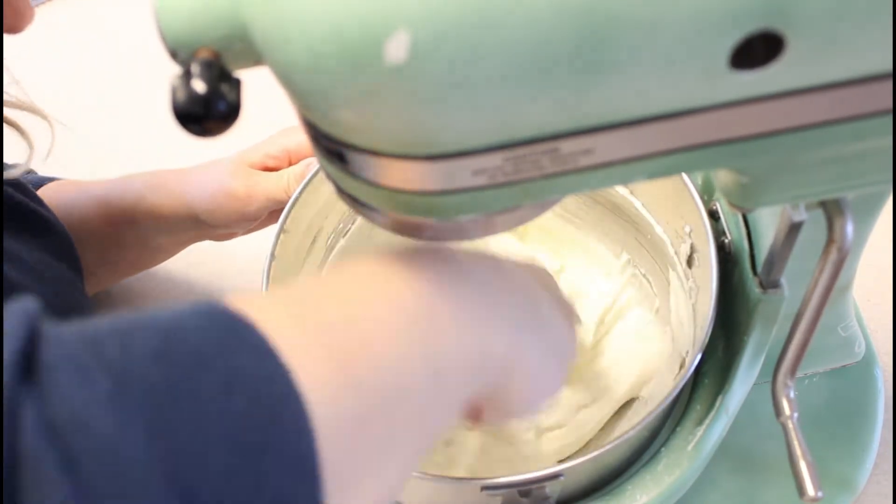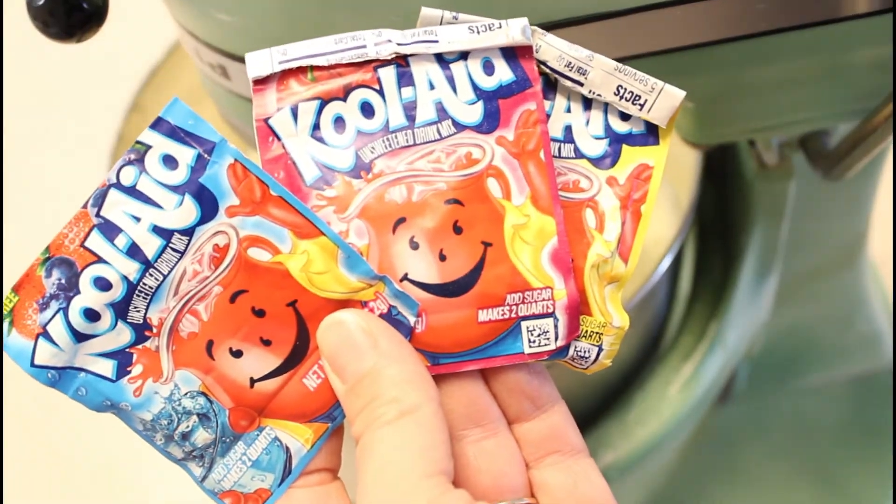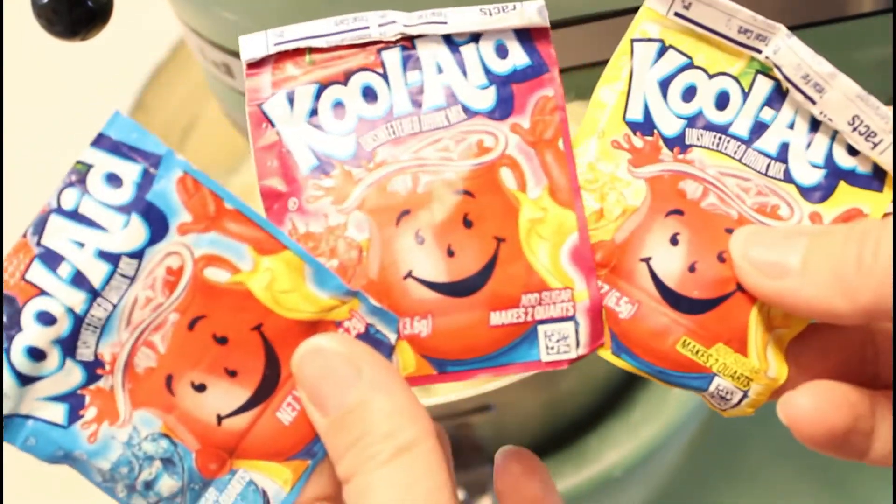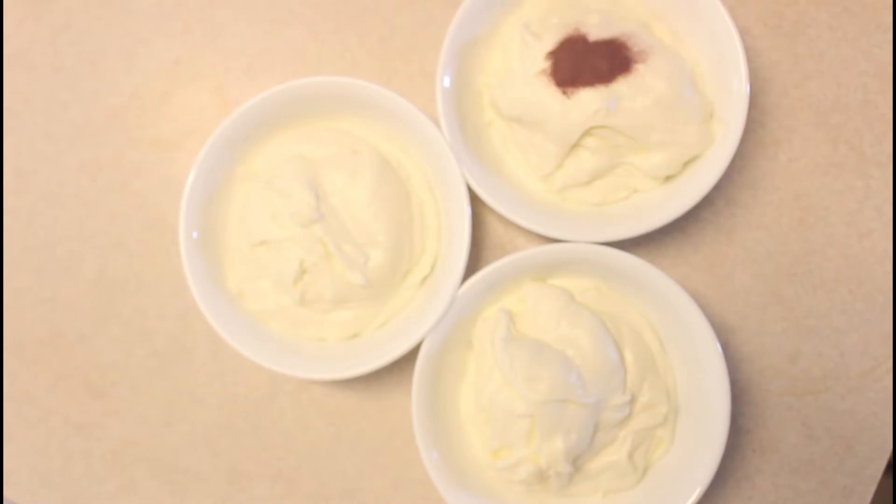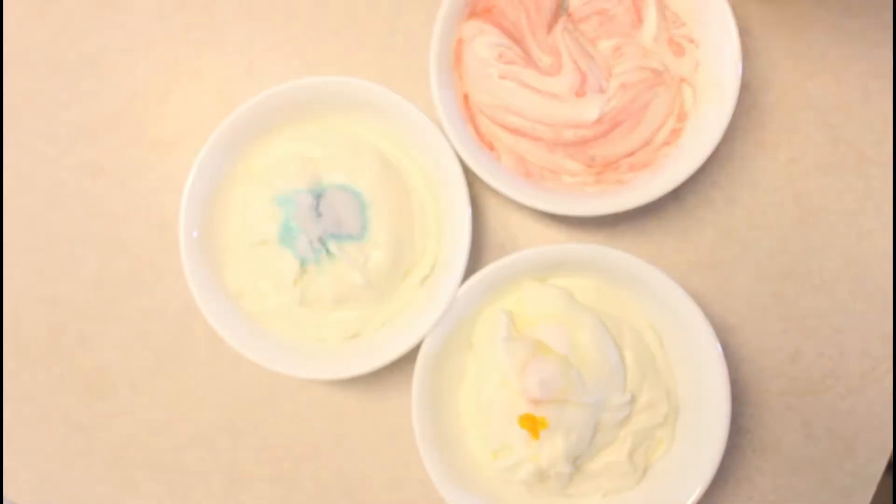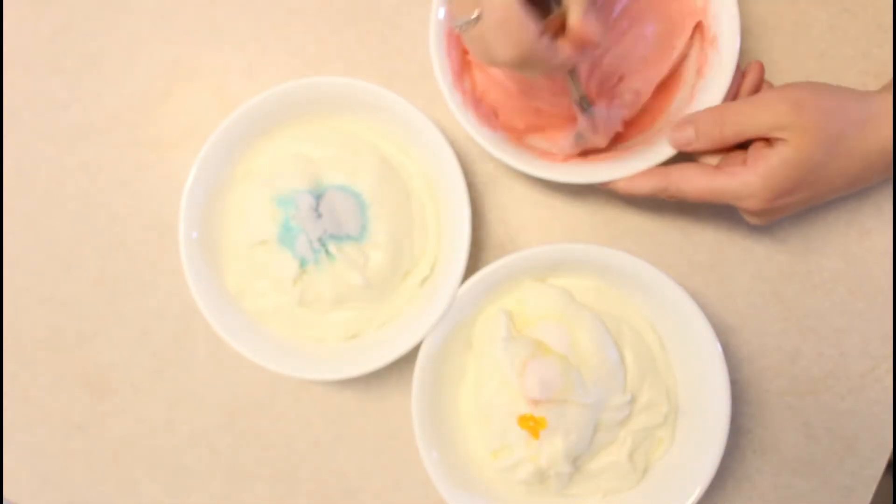Split your frosting into 3 bowls and add an eighth of a teaspoon of berry blue blast, black cherry, and lemonade Kool-Aid food coloring. The powder is so concentrated you really don't need more than that. This comes out to a really pretty pastel color, but if you want a deeper color, just add some food coloring to it. Don't add more powder. It's way strong.